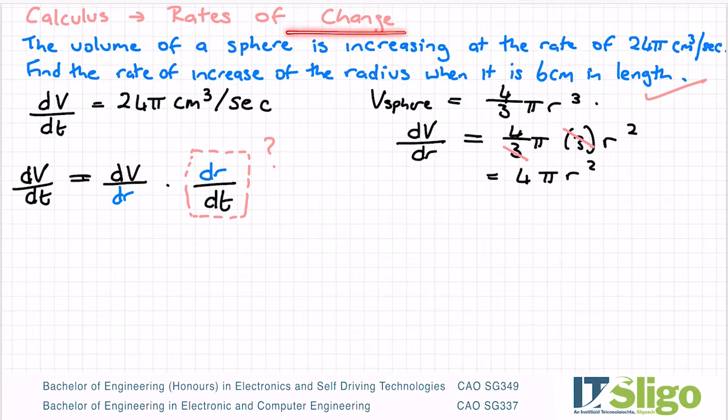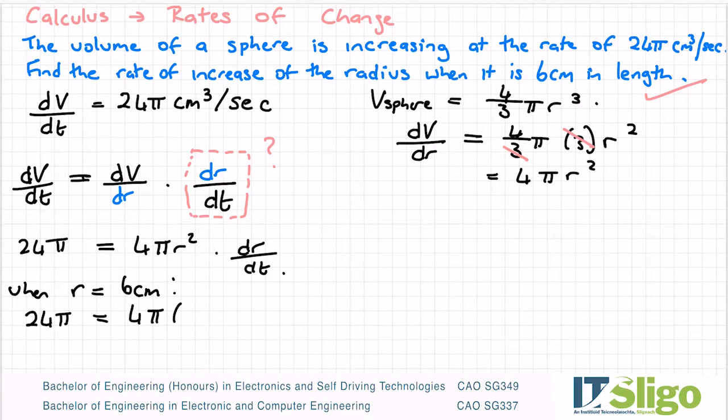dV/dt—they gave us in the question the volume of the sphere and what it's increasing by. So that is 24π, and that's equal to dV/dr, which is 4πr², times dr/dt. Now when r is equal to 6 cm, I'm left with 24π being equal to 4π × 6² × dr/dt.